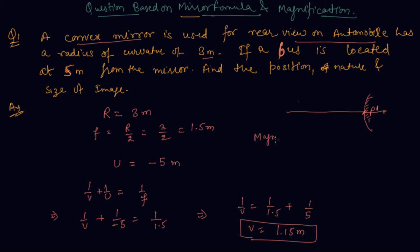Now we have to check the magnification. The formula for magnification is minus V by U, so minus 1.15 upon U is minus 5, which gives us 0.23.